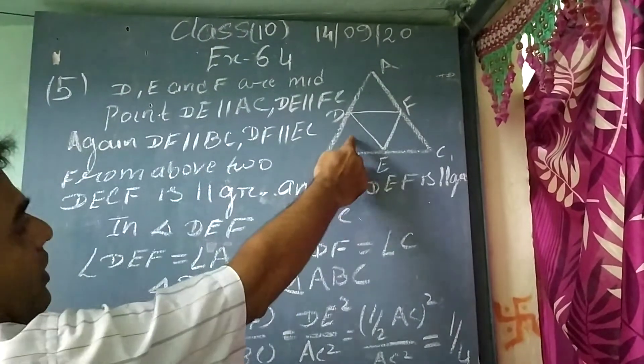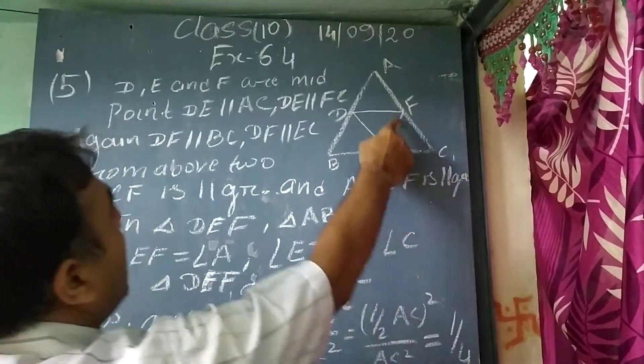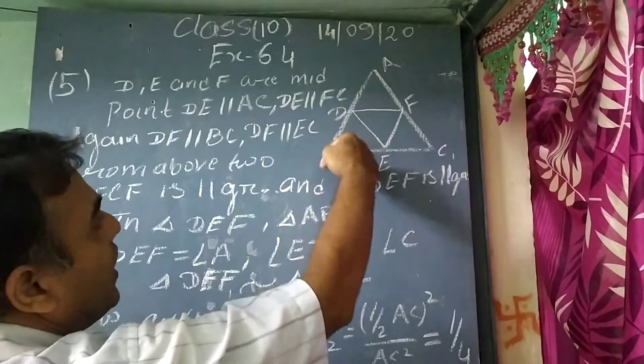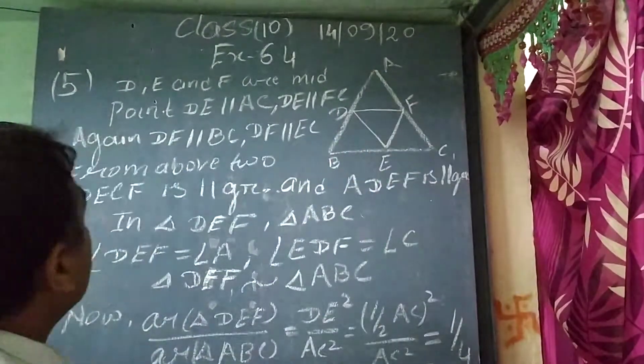So, question number 5. Here given in the figure, as you can see, D, F and E are the midpoints of sides AB, BC and CA.